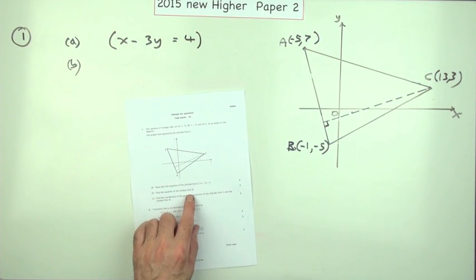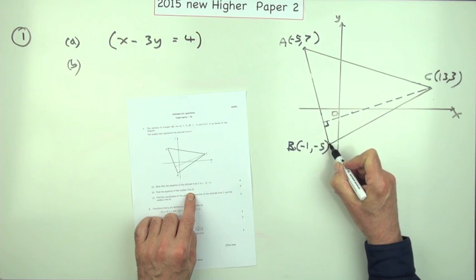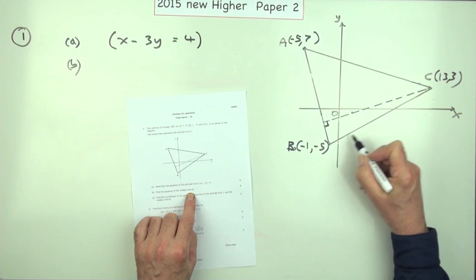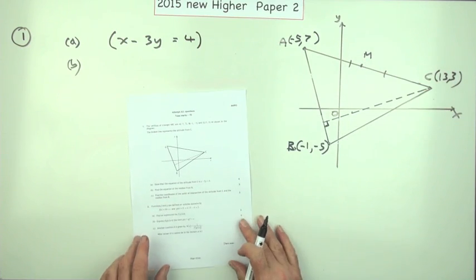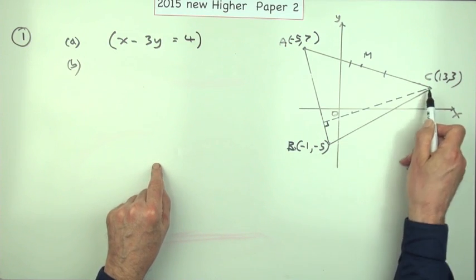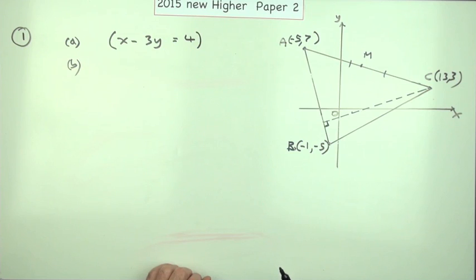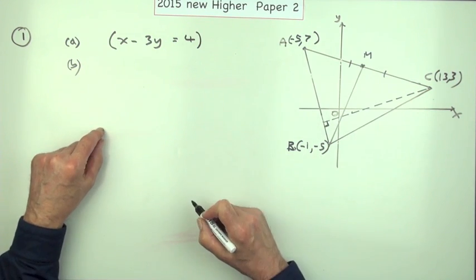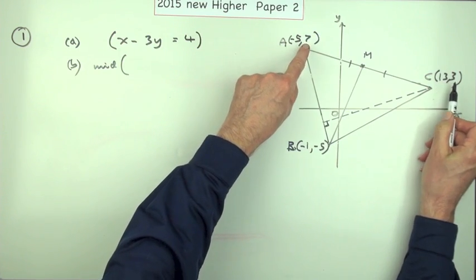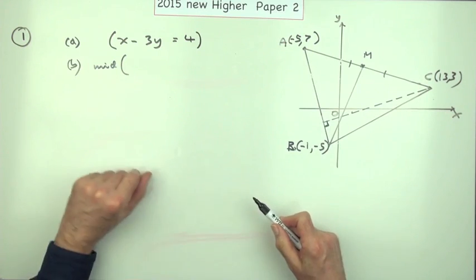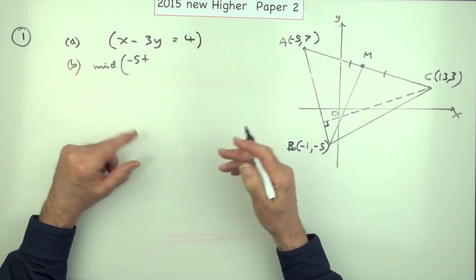Now part B: find the equation of the median from B. The median from B means from the vertex B, you go to the middle of the opposite side, you go to the midpoint. Maybe I'll just give it a name there. For three marks, if you go from the wrong corner or if you use some sort of perpendicular business, you'd only get one out of these three marks. So the first thing would be: what's that midpoint? The midpoint will be halfway between the x's, halfway between the y's - you go halfway from one point to the other.